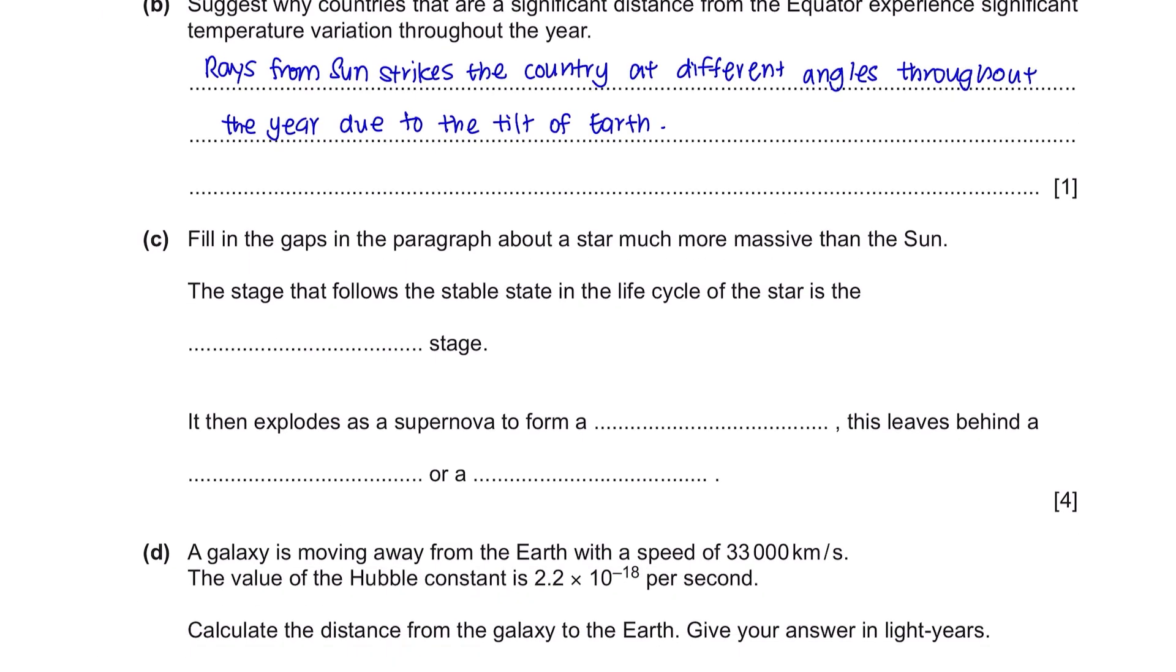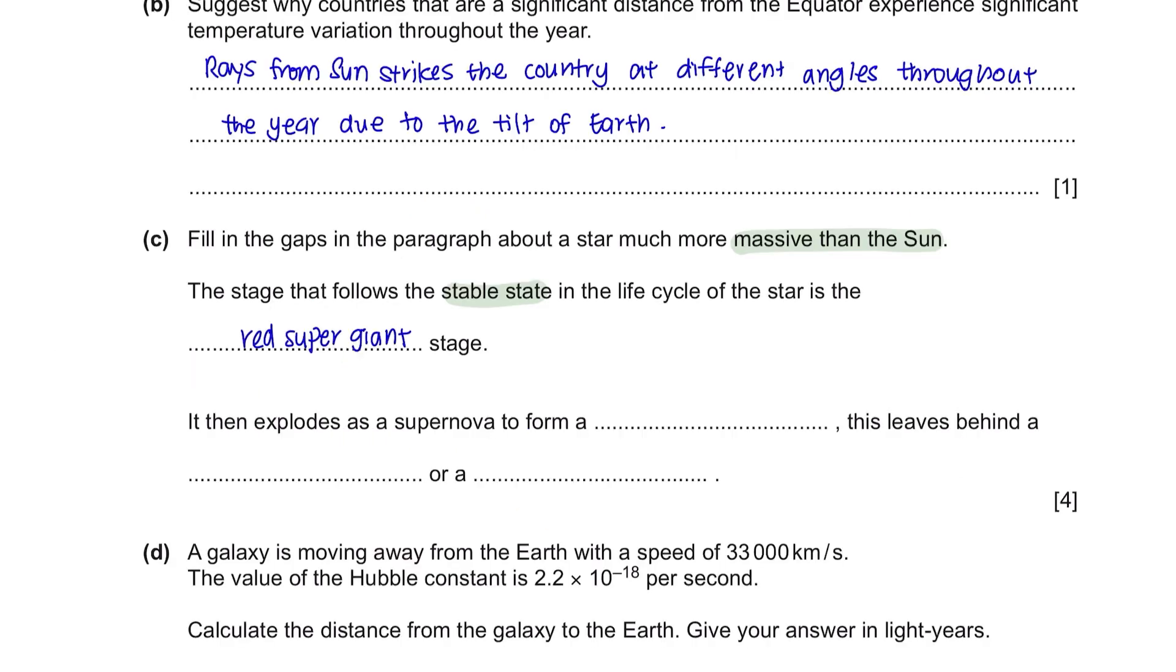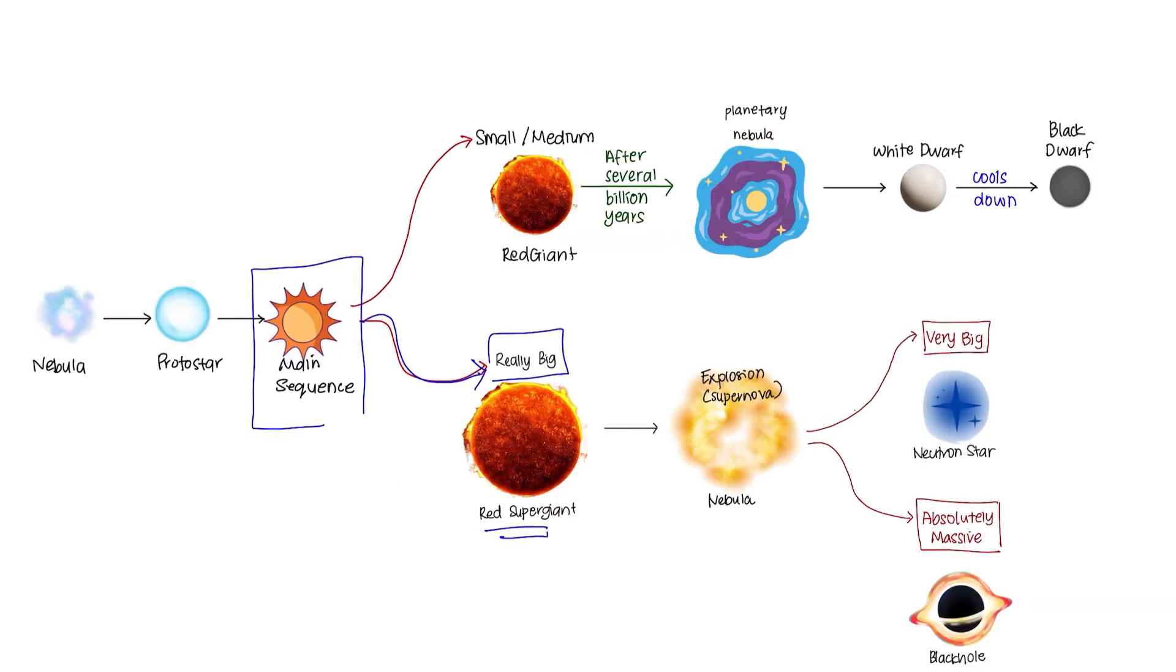Question C: Fill in the gaps in the paragraph about a star much more massive than the sun. The stage that follows the stable state in the life cycle of the star is the blank stage. Let's look at the overview of the life cycle of a star. This is the stable stage and for a star that is more massive than the sun, it becomes a red supergiant. So the answer is the red supergiant stage. It then explodes as a supernova to form a blank and this leaves behind two things. When it explodes as supernova, it forms a nebula and leaves behind either a neutron star or a black hole.